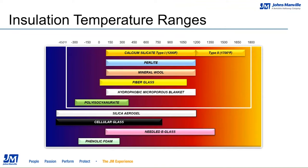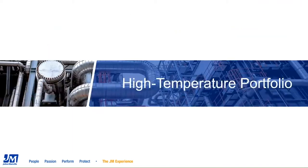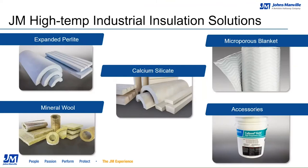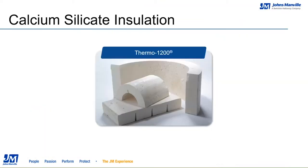In the industrial world, temperature ranges go from cryogenics at negative 450 degrees up to 1700 degrees Fahrenheit. The major products that serve this space are listed here, and the products in the white box toward the top are those that Johns Manville manufactures and supplies. For the high temperature portfolio, we have five major products: expanded perlite, calcium silicate, microporous blanket, and mineral wool, plus some accessories.